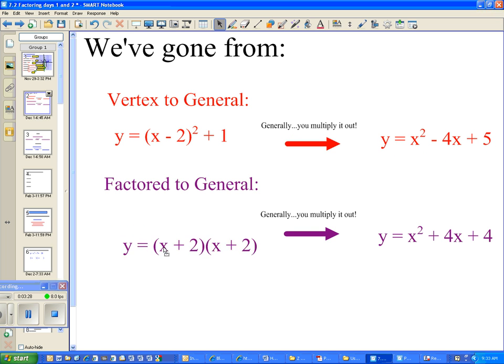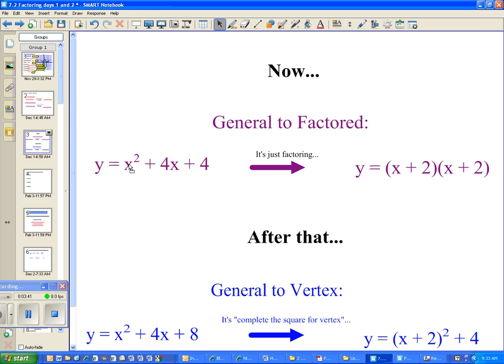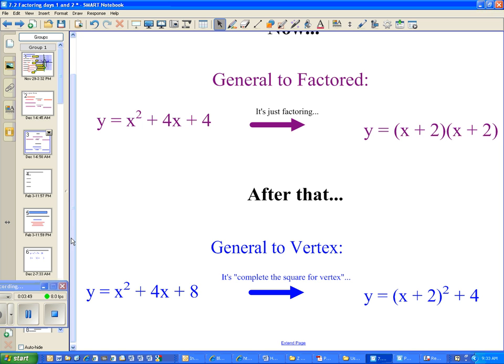And we've gone from factored form to general form, and generally you just multiply it out. So I'm trying to pound that into your head that when you see general form, it's generally just multiply. But now we're going to start with general and get factored form, and that's just factoring. And after that, like the next day, a couple days from now actually, we're going to go from this form to this form, and that's the hardest. Going from general form to vertex form over here. And to do that, we complete the square for the vertex. When you complete the square, you'll get the vertex form. And I'll teach you how to do that about two days from now.